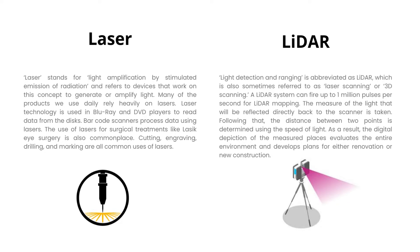Light Detection and Ranging is abbreviated as LiDAR, which is also sometimes referred to as laser scanning or 3D scanning. A LiDAR system can fire up to 1 million pulses per second for LiDAR mapping. The measure of the light that will be reflected directly back to the scanner is taken. Following that, the distance between two points is determined using the speed of light. As a result, the digital depiction of the measured places evaluates the entire environment and develops plans for either renovation or new construction.